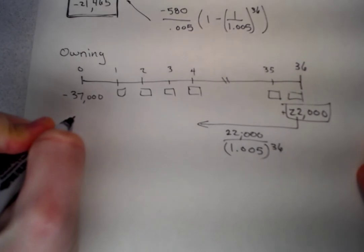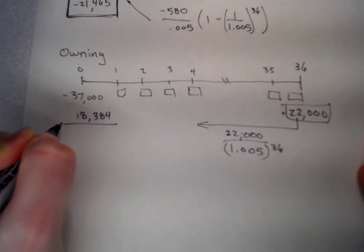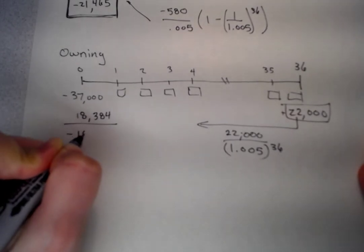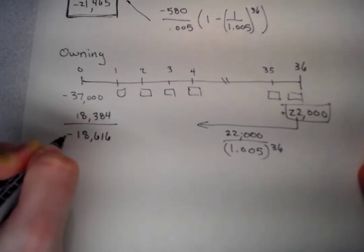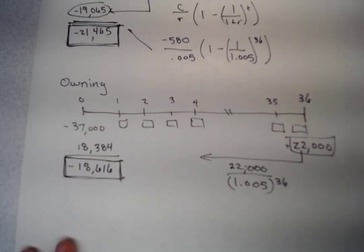When we discount that back, we get $18,384. We subtract and we have minus $18,616. That is the present value of owning.